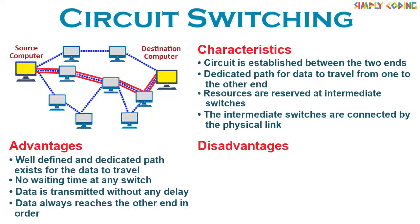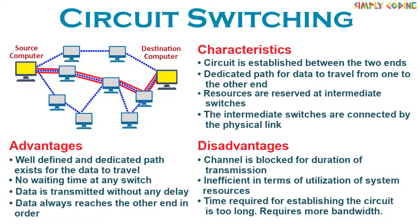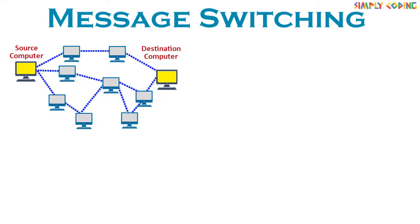Circuit switching has the following disadvantages: the channel is blocked for the duration of transmission, and it is inefficient in terms of utilization of system resources. The time required for establishing the circuit between the two ends is too long. It requires more bandwidth and is more expensive.